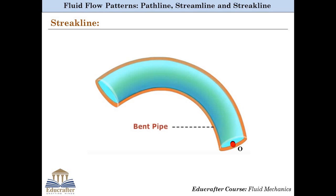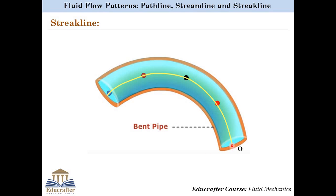Let us understand the concept of a streakline using the same example of fluid flow through the bent pipe. We can see that all four fluid particles are currently at different positions, but they all have earlier passed through point O of the domain, and hence the line joining these particles is known as the streakline.